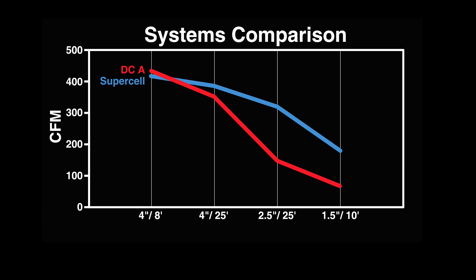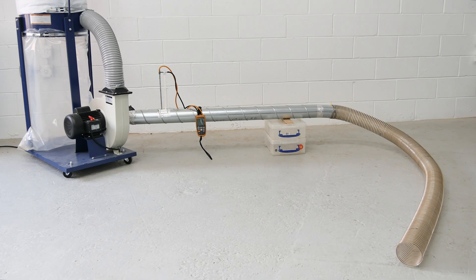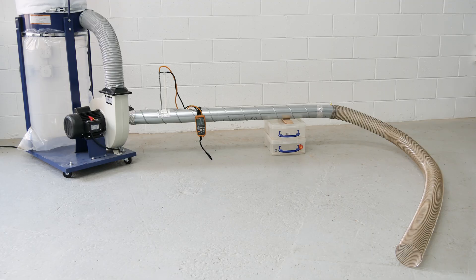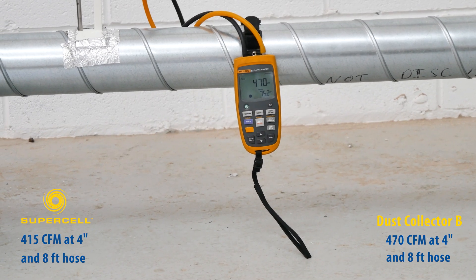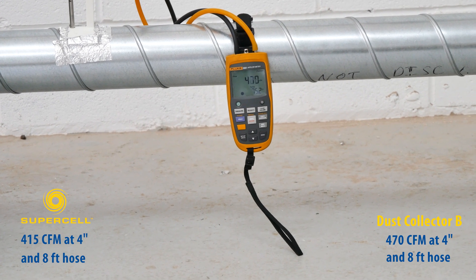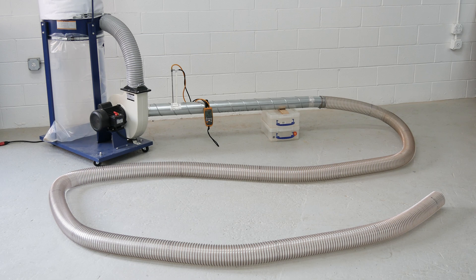Now, on to Dust Collector B, a traditional 2-horsepower single-stage dust collector. With 8 feet of 4-inch hose, the airflow is 470 CFM. With 25 feet of 4-inch hose, Dust Collector B shows 383 CFM.